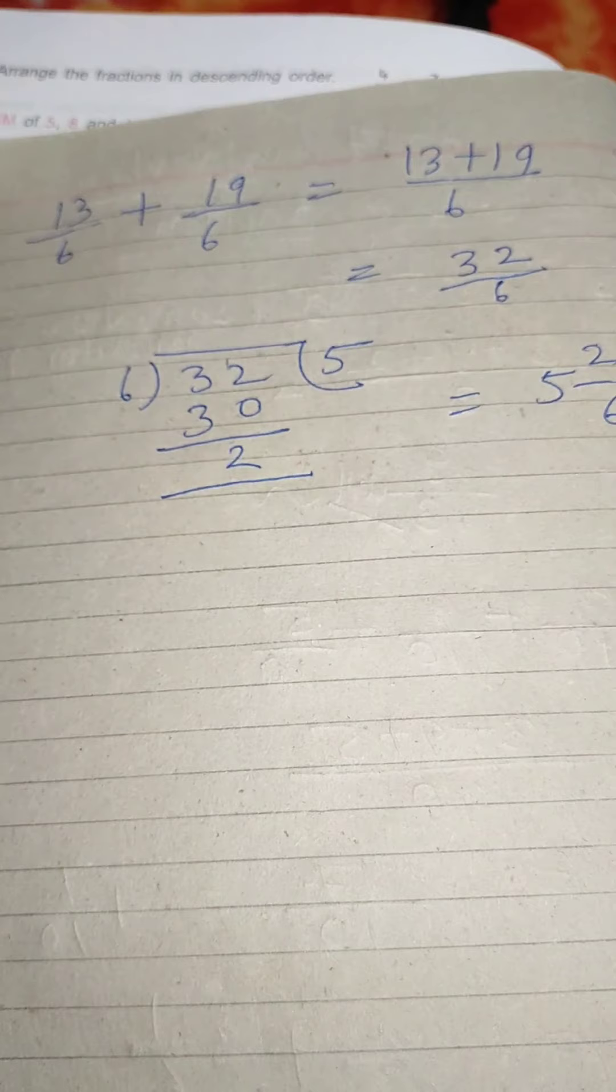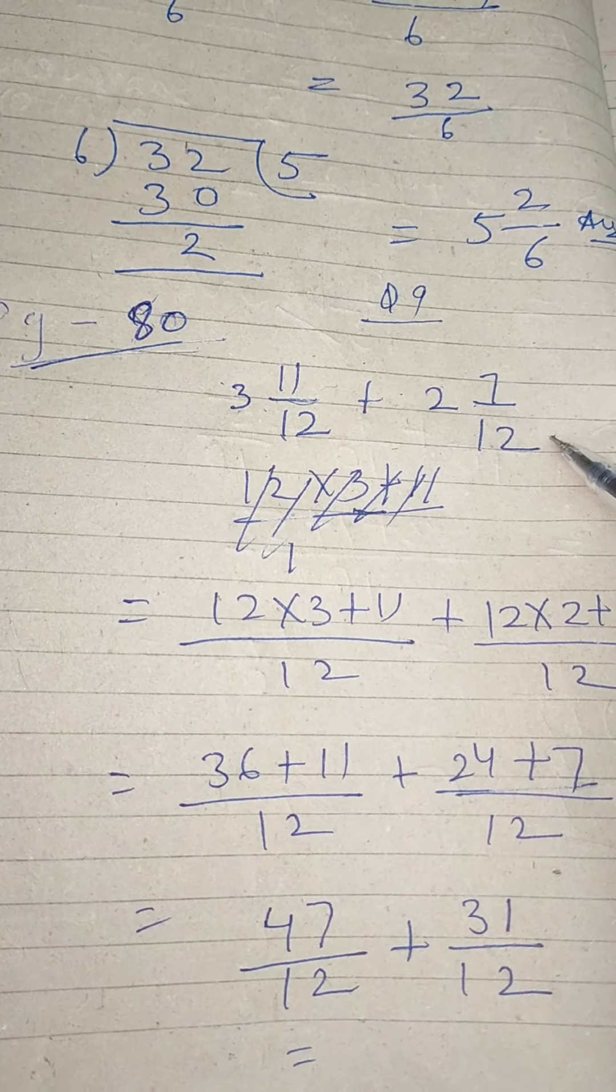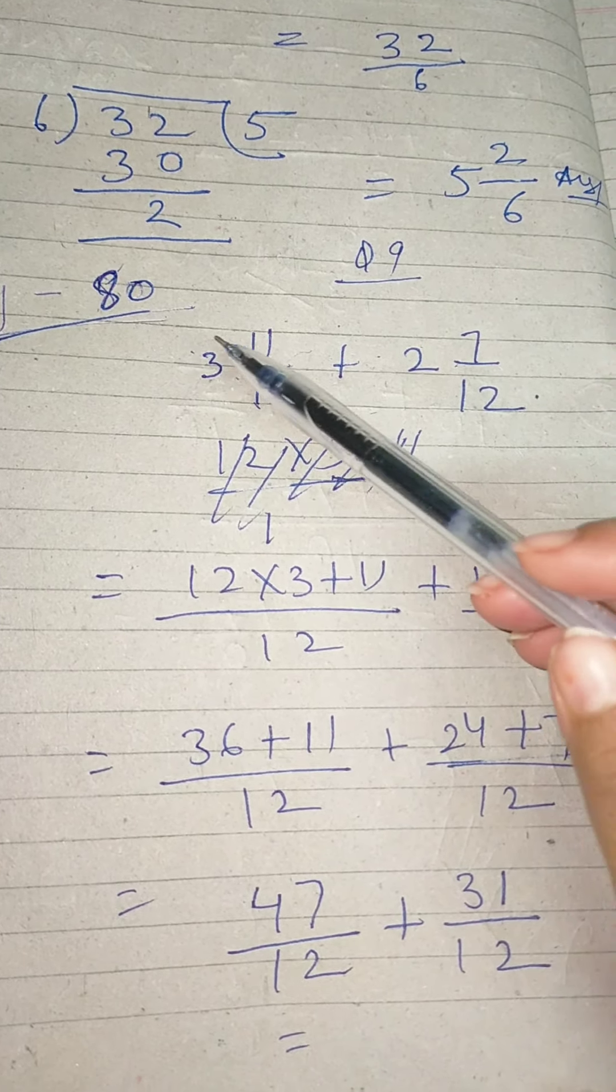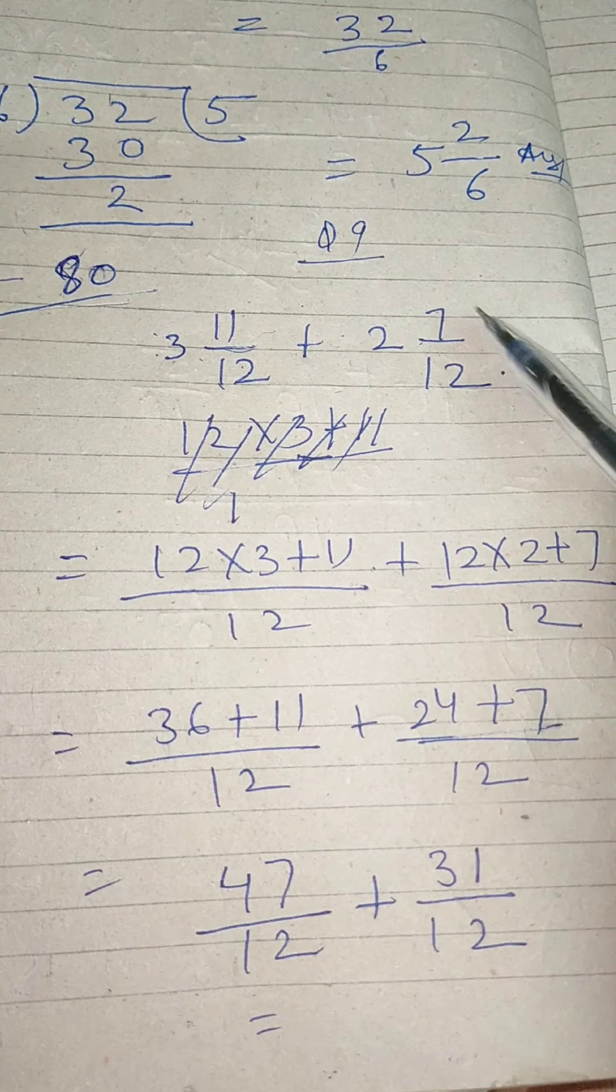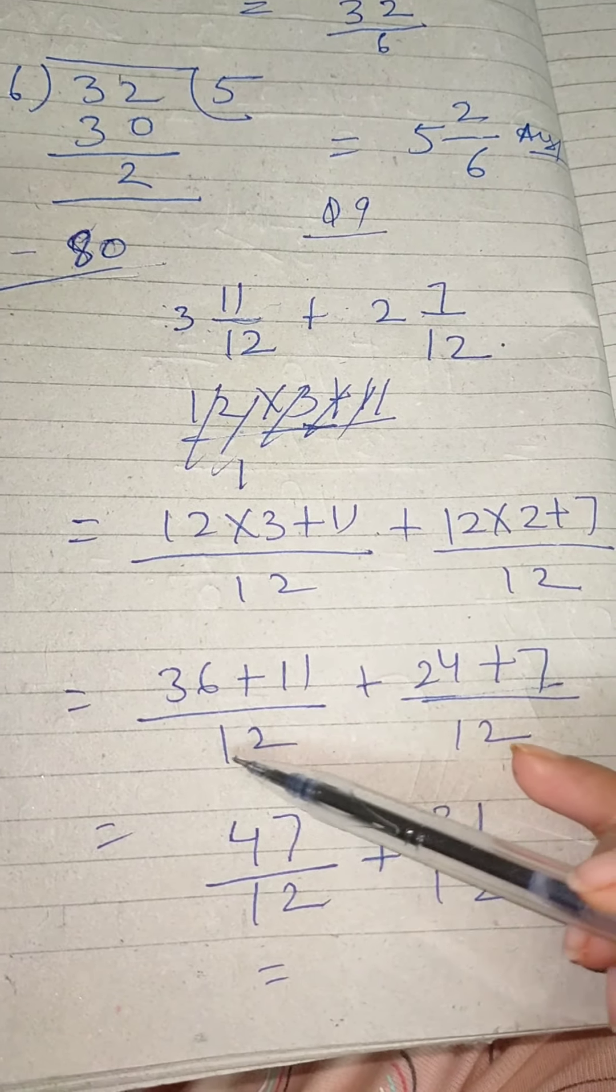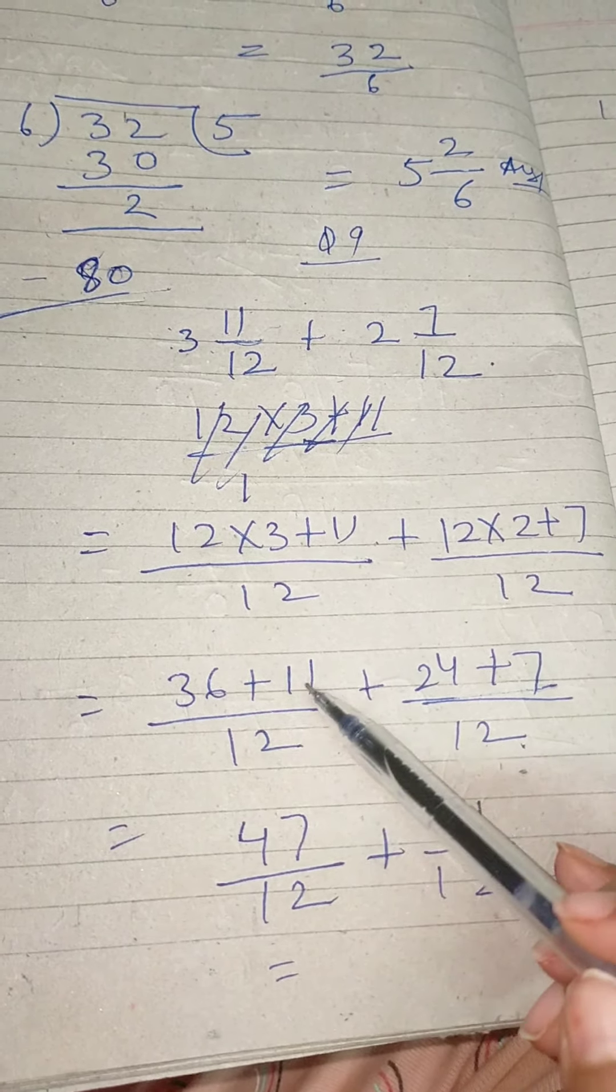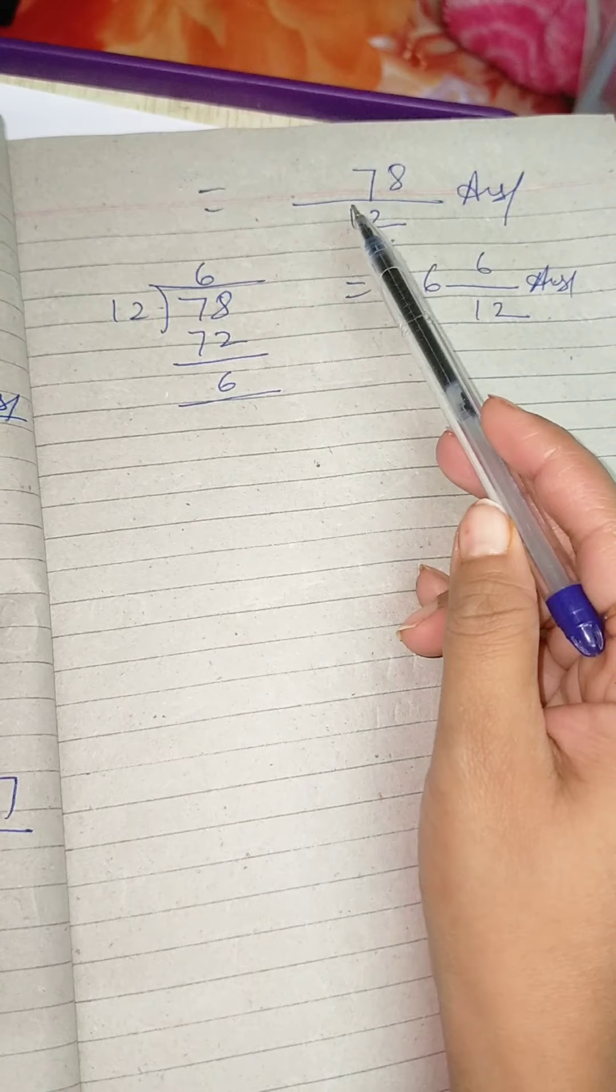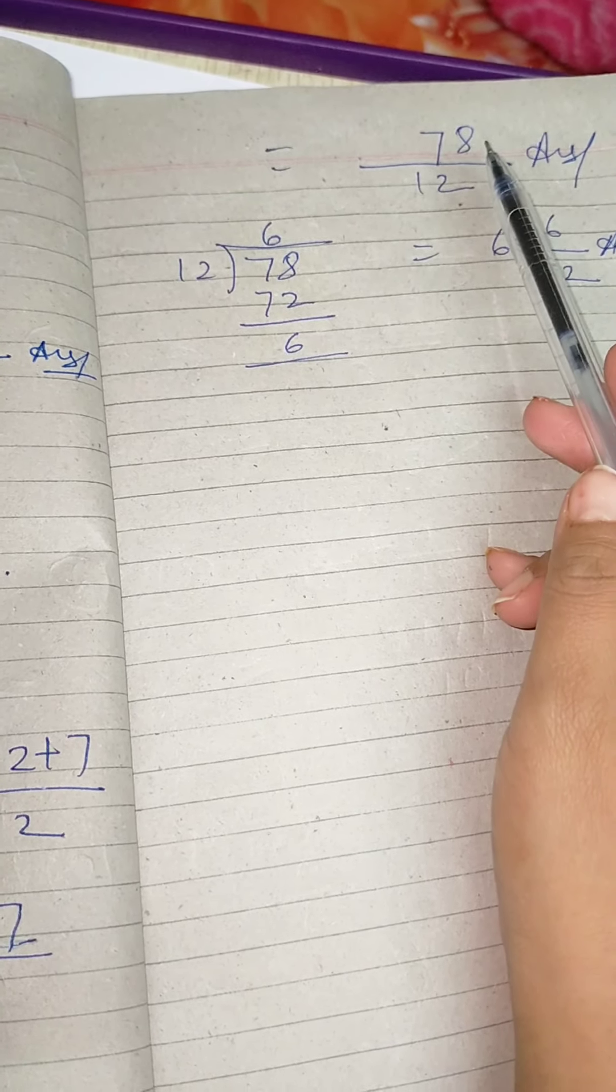Now simplify 3 and 11 by 12 plus 2 and 7 by 12. This is in mixed fraction. How to convert it? First, 12 into 3 plus 11, over 12, then 12 into 2 plus 7, over 12. Denominator stays 12. So 36 plus 11 divided by 12, and 24 plus 7 divided by 12. That gives us 47 over 12 and 31 over 12. Same denominator, take common denominator and add: 47 plus 31 equals 78 by 12.